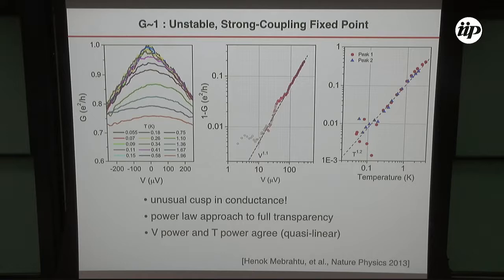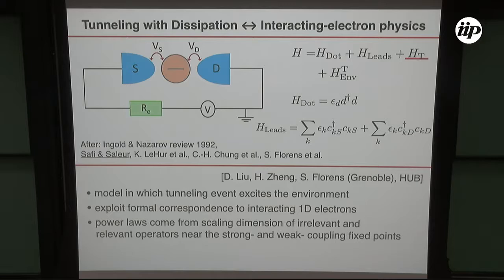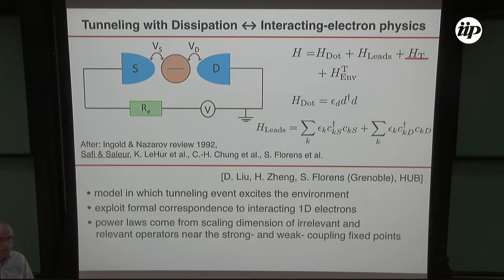That's my little summary of the experimental data. Here's my theorist's cartoon model of what's going on: I have a source and a drain, a single level, and there's some environmental resistance. The dot and the leads are standard — there's a single fermion for the dot, the leads are non-interacting fermions, and the environment, as I mentioned, is simply a collection of harmonic oscillators. All of the action is in the tunneling Hamiltonian.